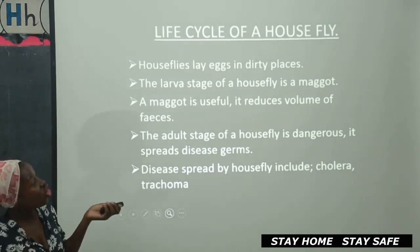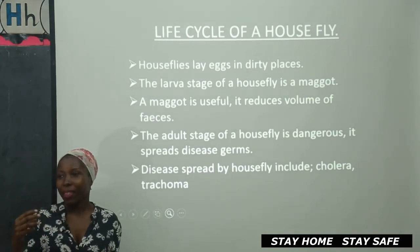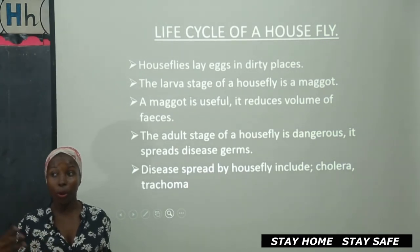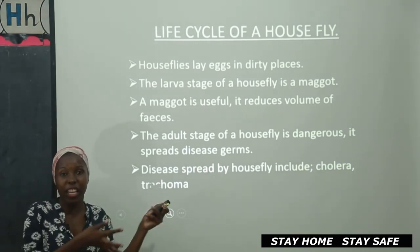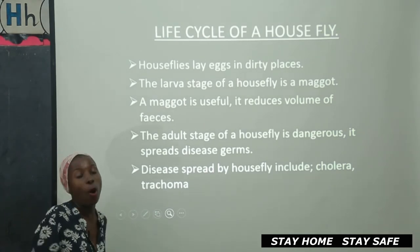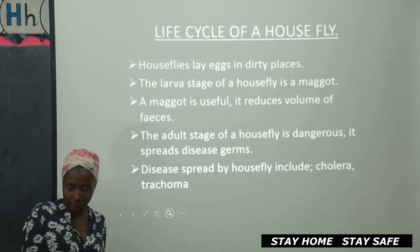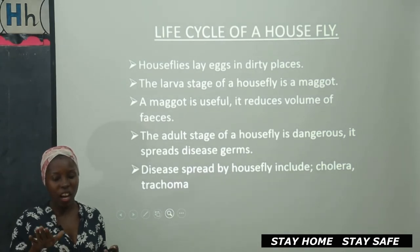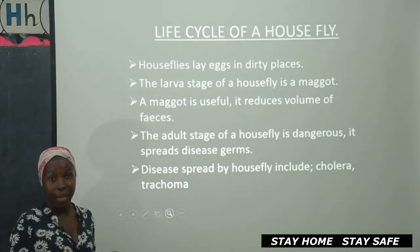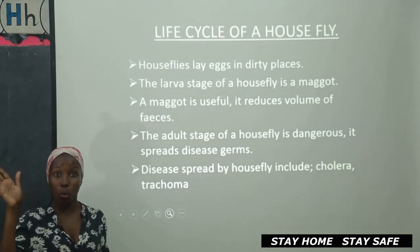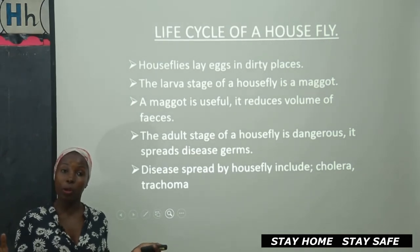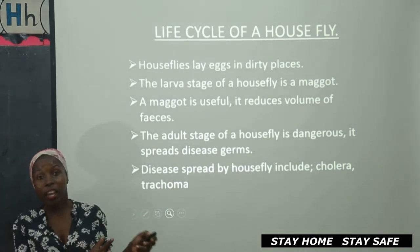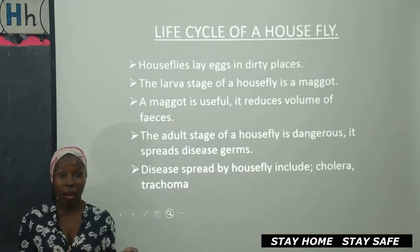The maggot is also very useful because it reduces the volume of feces. We said the housefly lays its eggs in dirty places like a latrine — that's where we defecate from. The feces in the latrine is being fed on by the maggots, and once they keep eating them, they are reducing their volume. So the toilet that would be full maybe within two or three months would take much longer before it becomes full. That's how important the maggot is in that area — also in reducing decaying matter. It's very, very helpful.